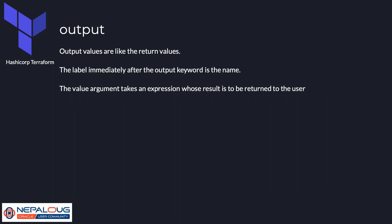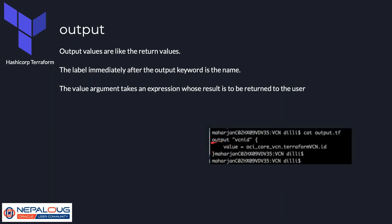The output block is used for return values, similar to a return value in programming. You start with the keyword 'output', followed by the name — for example 'vcn_id' — and then 'value' set to the resource reference, like 'oci_core_vcn.terraform_vcn.id'. At the end of terraform apply, this block will display the OCID of the VCN that was created.